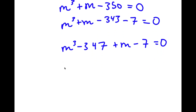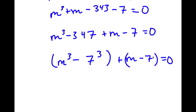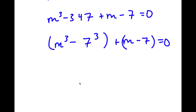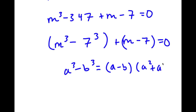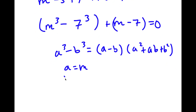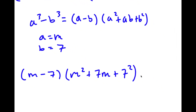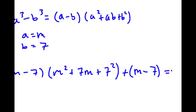Now, m cubed minus 343 is the same thing as m cubed minus 7 cubed. And I have this plus m minus 7. If I have something in the form a cubed minus b cubed, this is the same thing as (a minus b)(a squared plus ab plus b squared). So in this case, a is m and b is 7. So I have (m minus 7)(m squared plus 7m plus 49) plus (m minus 7) is equal to 0.